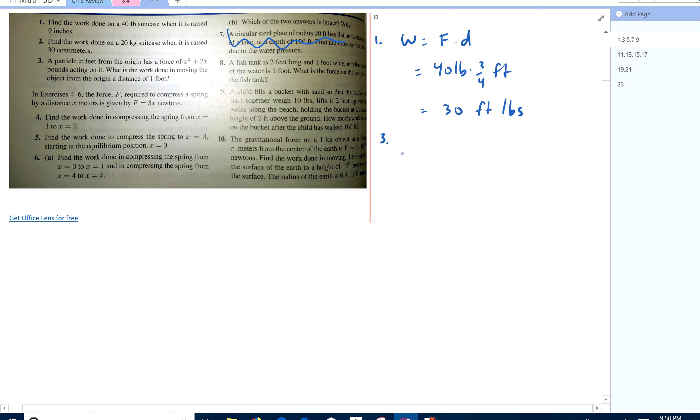A particle x feet has a force of x squared plus 2x pounds acting on it. What's the work done in moving the object from the origin to 1 foot? Let's see. We've got f is equal to x squared plus 2x. What's the work done in moving the object a distance of 1 foot?